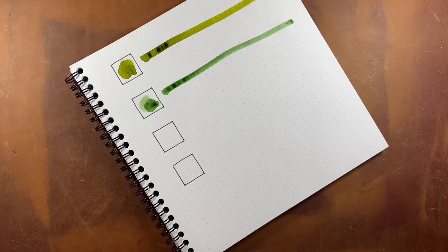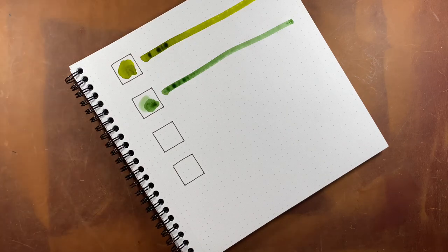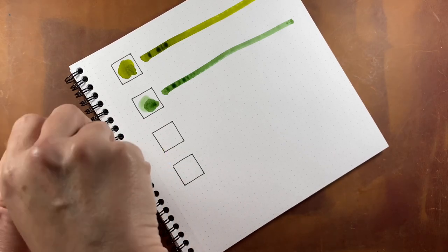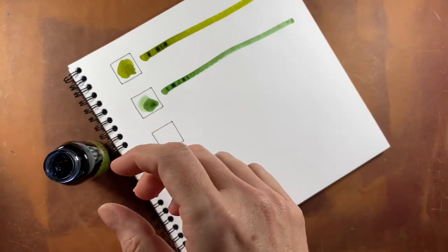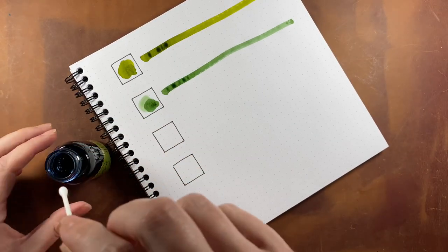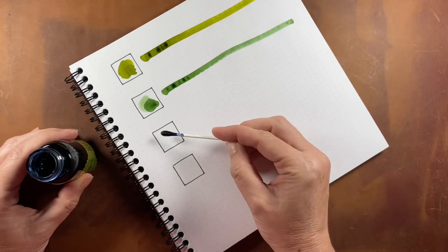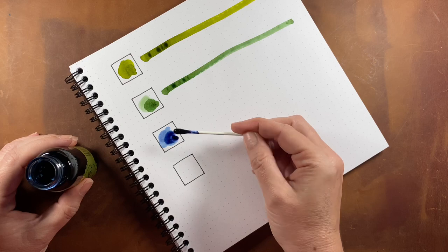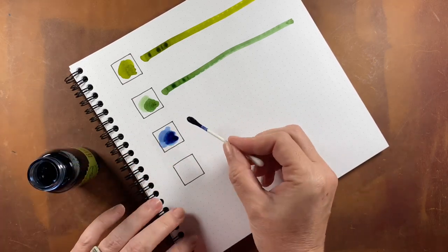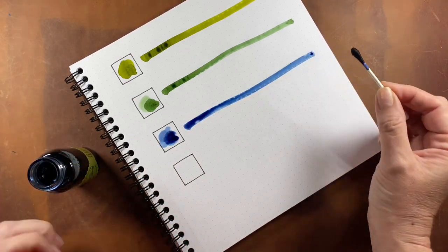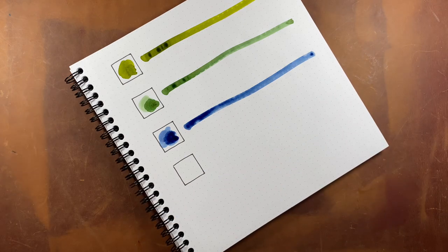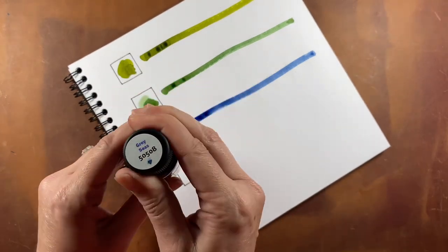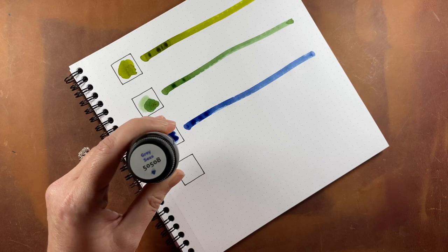And then from green, we're going to move into slightly more blue tone. And this one is called gray seas. This gray happens to be spelled with an E-Y instead of the A-Y.